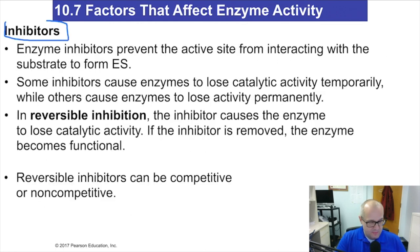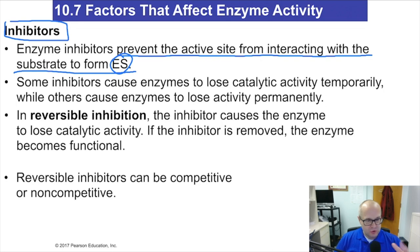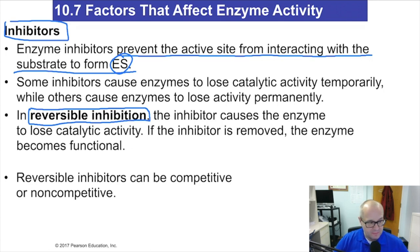There are also things called inhibitors. Inhibitors prevent the active site from interacting with the substrate to form the enzyme-substrate complex. There are two kinds of inhibitors: reversible and irreversible. Reversible inhibitors cause the enzyme to lose catalytic activity, but if the inhibitor is removed, the enzyme goes back to work — it doesn't kill the enzyme, it simply stops it while it's there.